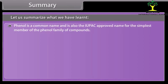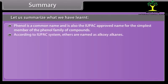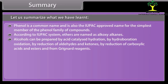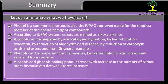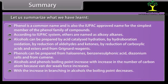Phenol is a common name and also the IUPAC approved name for the simplest member of the phenol family. According to the IUPAC system, ethers are named as alkoxyalkanes. Alcohols can be prepared by acid-catalyzed hydration, hydroboration-oxidation, reduction of aldehydes and ketones, reduction of carboxylic acids and esters, and from Grignard reagents. Phenols can be prepared from haloarenes, benzene sulfonic acid, diazonium salts, and from cumene. The boiling point of alcohols and phenols increases with increase in carbon atoms; with increased branching, boiling point decreases. Generally, alcohols and phenols are soluble in water.